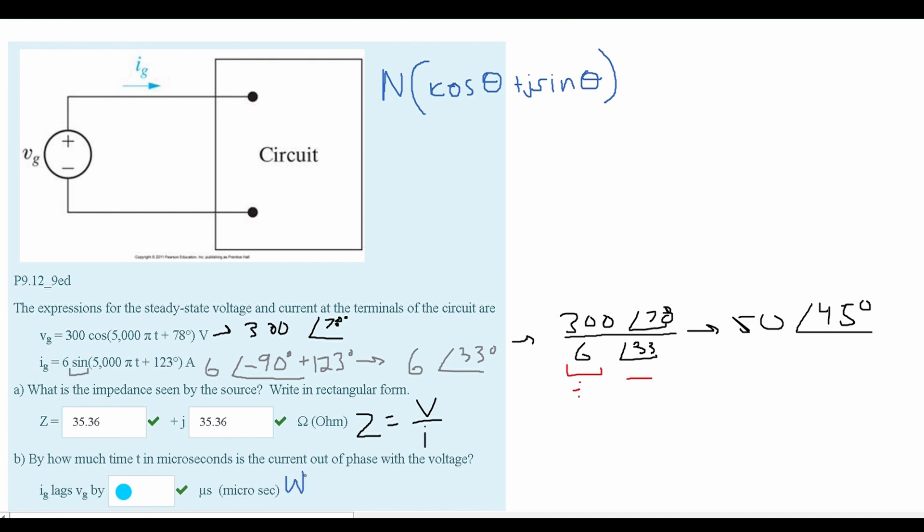Frequency is one over T, so we replace this with one over T. We want T by itself, so we multiply T by both sides and divide both sides by omega. That gives us T equals 2π over omega. Looking back at our steady state equations, we can see that omega is 5000π. Plugging this into a calculator, we get T is equivalent to 4 times 10^-4, and this is at 360 degrees.